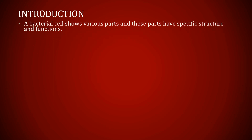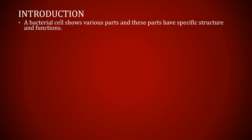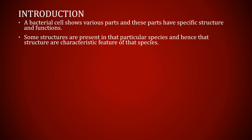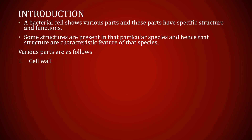A bacterial cell shows various parts and these parts have specific structure and functions. Some structures are present only in a particular species and hence those structures are a characteristic feature of that species. Let's see the various parts.